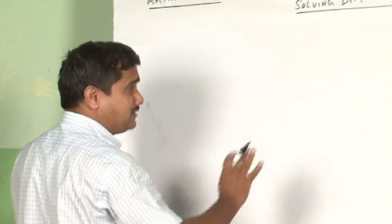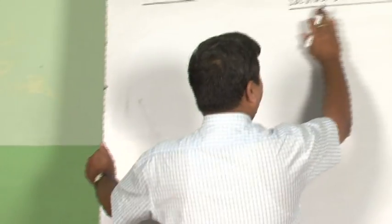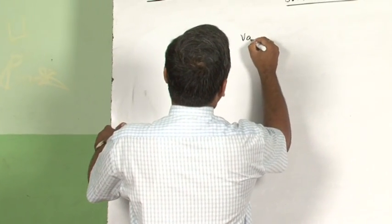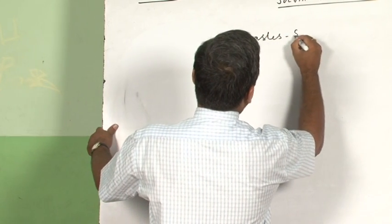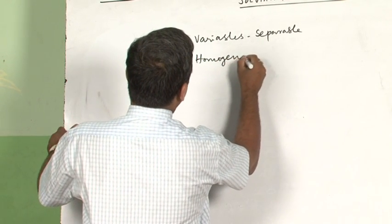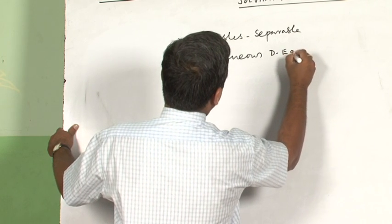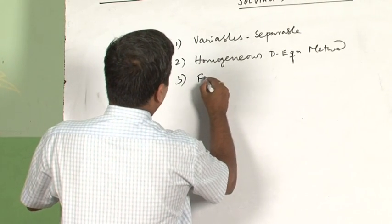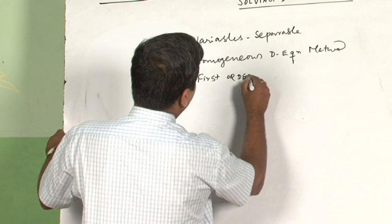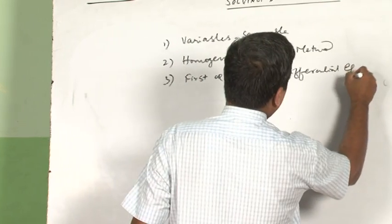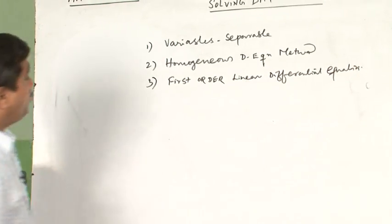Now let me start with solving differential equations and arriving at the general solutions. In order to solve a differential equation, we have basically three different methods in the present CBSE syllabus: number one, variables separable; two, homogeneous differential equation method; and third, first order linear differential equations. We will be solving all three in due course of time.